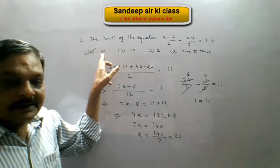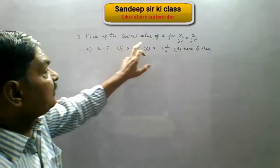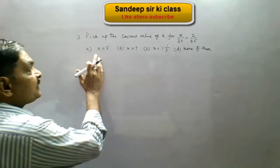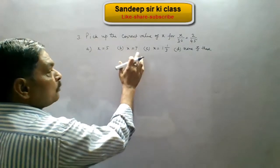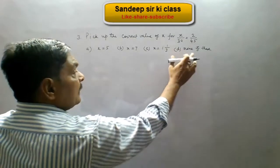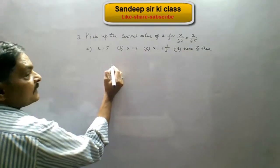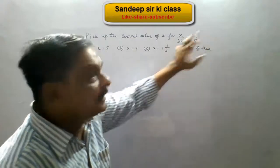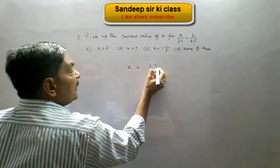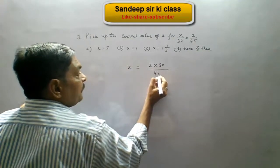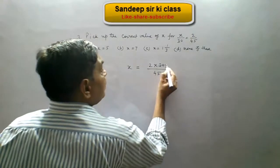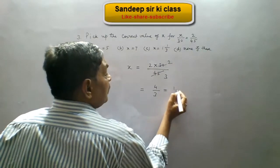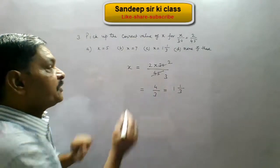Question number 3: pick up the correct value of x for the equation x upon 30 equals 2 upon 45. Options are: A — x equals 5, B — x equals 7, C — x equals 1 and 1 upon 3, D — none of these. When we cross multiply, 30 goes to the right hand side, giving x equals 2 into 30 upon 45. Simplifying by 15, we get 4 upon 3, which is 1 and 1 upon 3. So option C is correct.